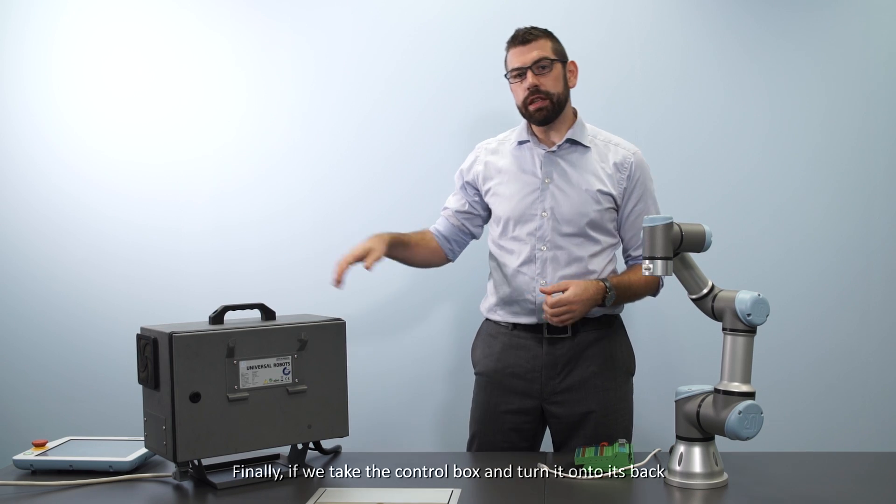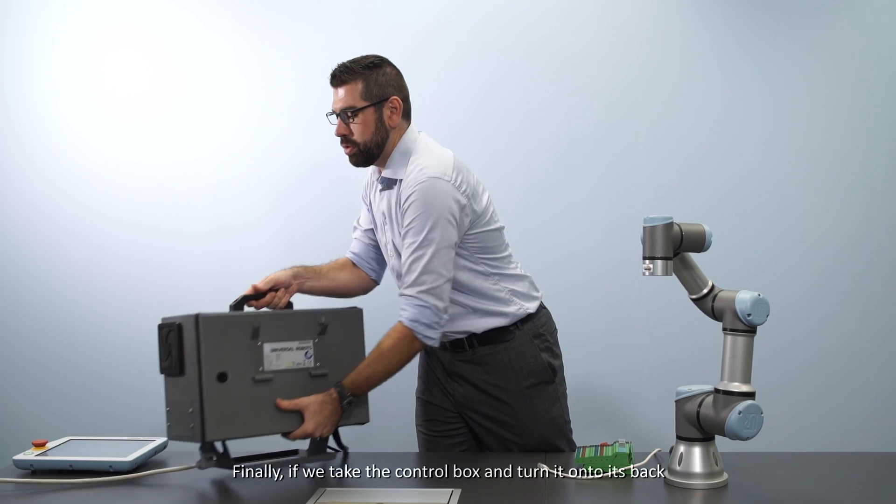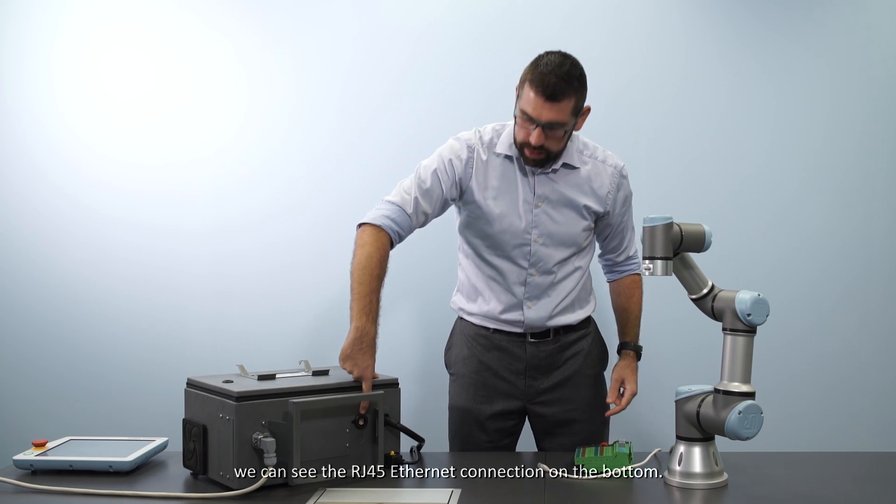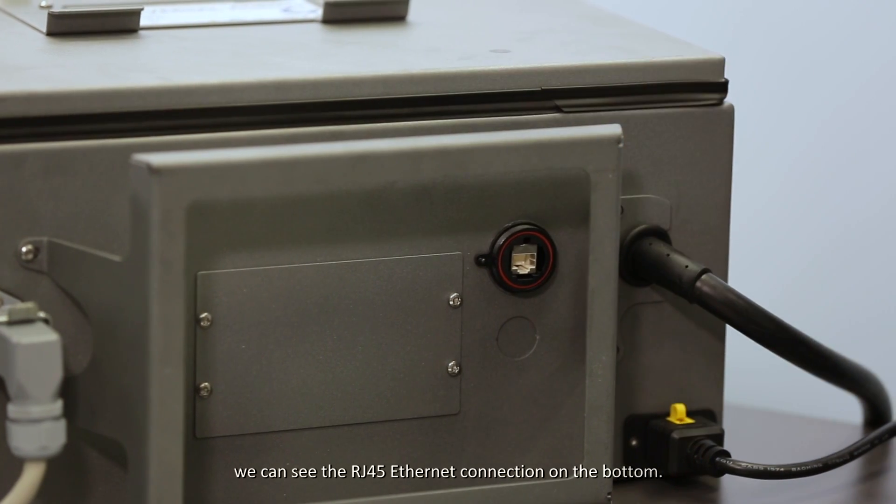Finally if we take the control box and turn it onto its back we can see the RJ45 ethernet connection on the bottom.